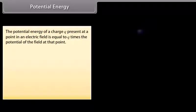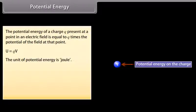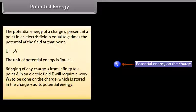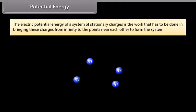Potential energy: The potential energy of a charge Q present at a point in an electric field is equal to Q times the potential of the field at that point: U equals QV. The unit of potential energy is joule. Bringing a charge Q from infinity to a point A in an electric field requires work W_A, which is stored as potential energy: U_A equals Q times V_A. The electric potential energy of a system of stationary charges is the work that has to be done in bringing these charges from infinity to form the system.